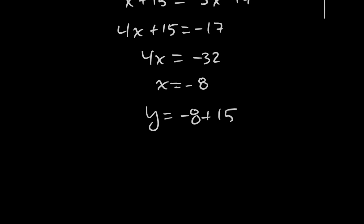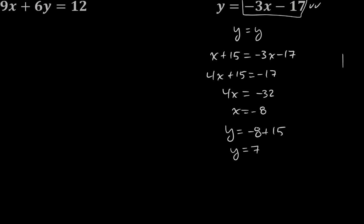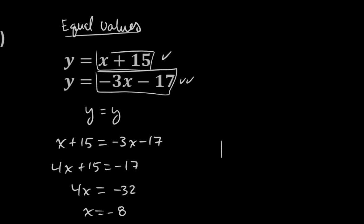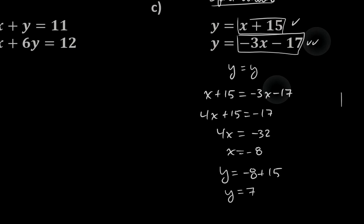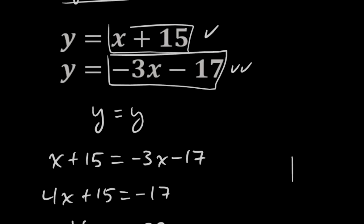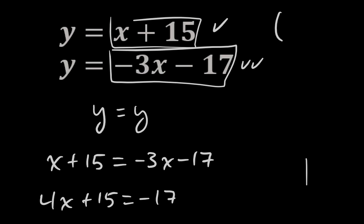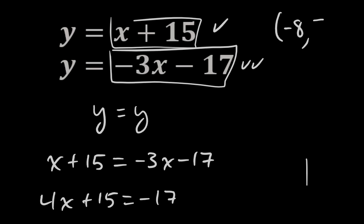And if I combine those two, I do get that y is the number 7. So my solution, I believe, is x is negative 8, y is 7. So let me write that down: (negative 8, 7).